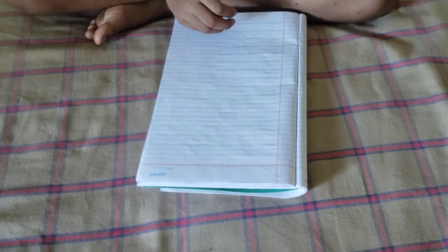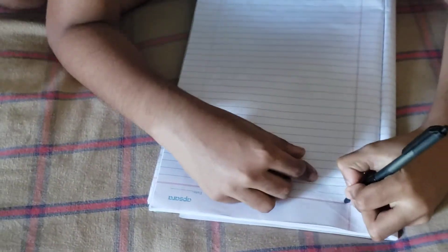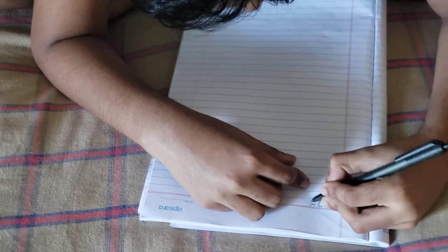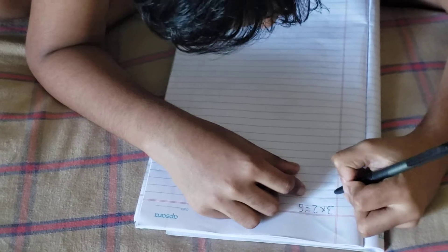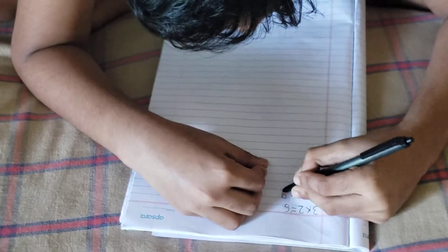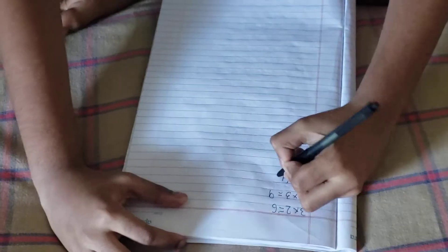So you should write 3 table and 9 table. So let's start writing. You don't need to write 3 into 1 and 9 into 1. Just write from 3 into 2 and 9 into 2. So 3 times 2, 6. 3 times 3, 9. 3 times 4, 12.